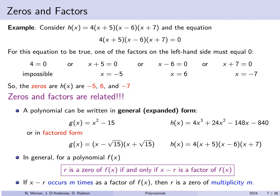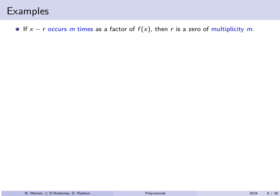If the factor (x − r) occurs multiple times in a factored polynomial, then r is called a zero of that multiplicity — specifically, the multiplicity is how many times (x − r) appears as a factor. So if (x − r) occurs m times, r is a zero of multiplicity m.